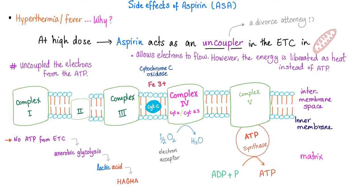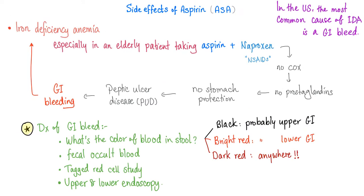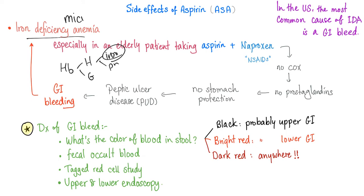Aspirin can also lead to hyperthermia or fever because aspirin is an uncoupler. When you don't produce ATP, you will shift to anaerobic glycolysis, generating lots of lactic acid — welcome to high anion gap metabolic acidosis. Aspirin can prevent clots, but it can also make you bleed. When you lose blood, you lose red blood cells containing hemoglobin, heme, iron, and protoporphyrin. When you lose iron in the stool or vomitus, you end up with iron deficiency anemia, which is microcytic anemia.